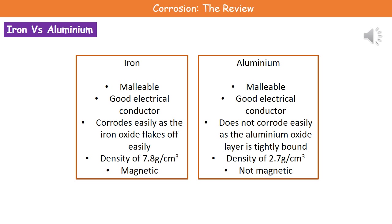If we look at the densities, the phrase we want to use when talking about density is 'lightweight' — don't just say 'light', say 'lightweight'. Iron, with a density of 7.8 grams per centimetre cubed, is not lightweight. Whereas aluminium, with a density of 2.7 grams per centimetre cubed, is lightweight, which obviously makes it good for planes since we don't want materials with a very high density.